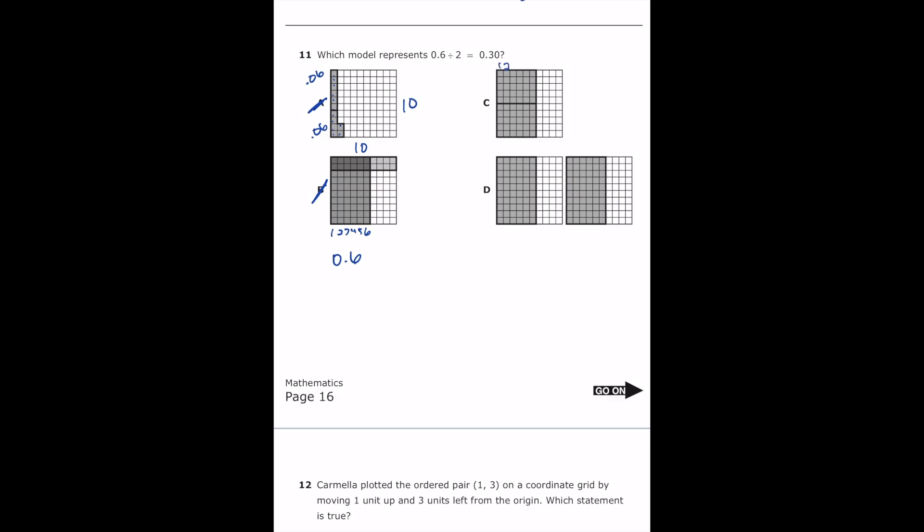Letter C, we have 1, 2, 3, 4, 5, 6 shaded in. So that is 0.6, six tenths. And then they have the whole shaded area split into two. See this right here? And so that means that each of these squares now is going to be 0.30. So that one does make sense. Our answer is letter C.